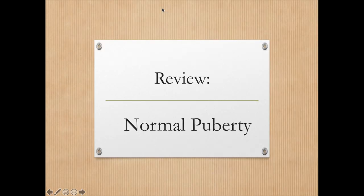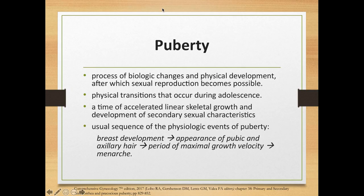Let's review normal puberty. Puberty is a process of biologic changes in physical development after which sexual reproduction becomes possible. It consists of physical transitions that occur during adolescence, a time of accelerated linear skeletal growth and development of secondary sexual characteristics. The usual sequence of physiologic events are: first, breast development; followed by appearance of pubic and axillary hair; followed by a period of maximal growth velocity; and last, menarche.